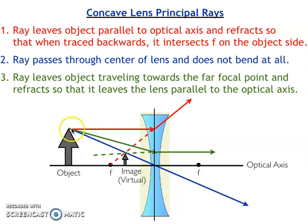The third principal ray travels towards the focal point on the far side of our lens, meaning if I were to continue this line, continue this light ray along a straight line, it would intersect with this focal point. However, when this ray reaches the center of our lens, it bends enough that it comes out parallel to the optical axis.